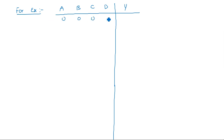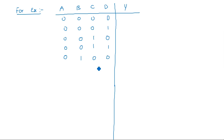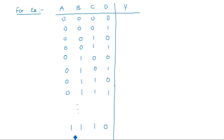The truth table output values are: row 0 → 0, row 1 → 0, row 2 → 0, row 3 → 1, row 4 → 0, row 5 → 1, row 6 → 1, rows 7–13 → 0, row 14 → 1, row 15 → 1. So the minterms with output 1 are at positions 3, 5, 6, 14, and 15.